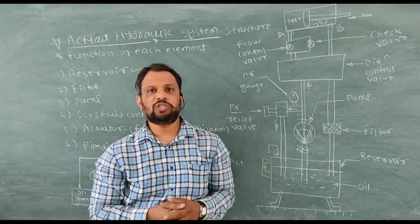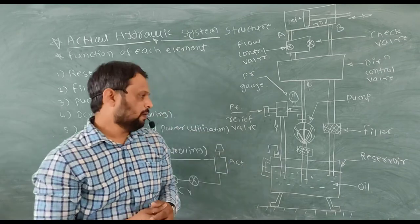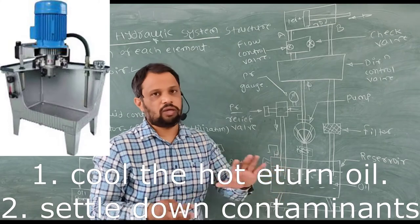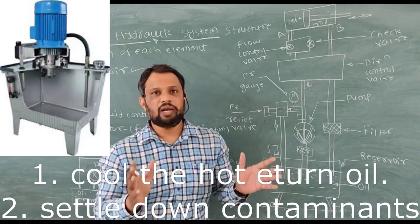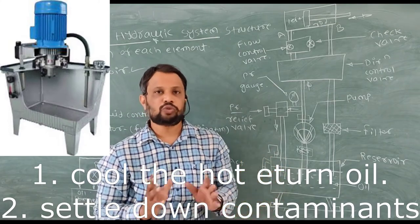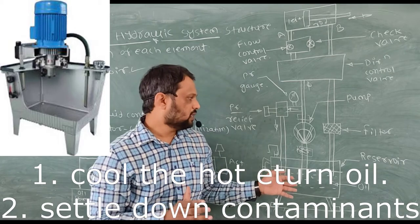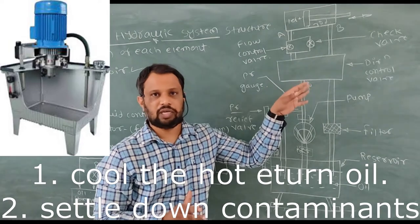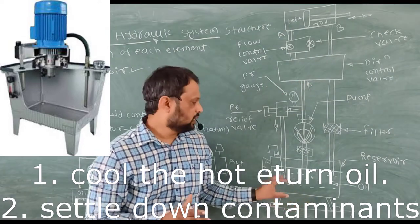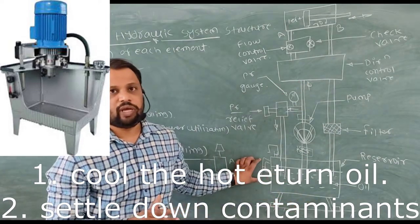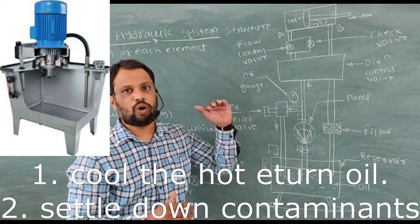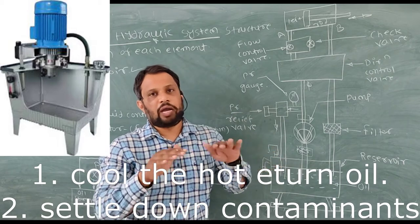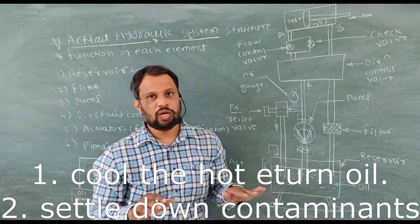Now what is the function of each element? First of all we are going to start from your oil reservoir. The oil reservoir is a metal tank in which oil is stored. Oil is provided to the system from this tank, and when the work is done, it returns to the tank again. There is one glass tube which shows the level of oil in your tank, and there is one breather which keeps hydraulic pressure on your tank.